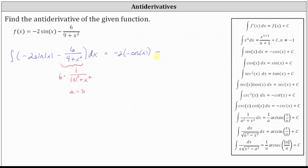And therefore the antiderivative of six divided by the quantity nine plus x squared is equal to six times one divided by a, which is one divided by three or one third,